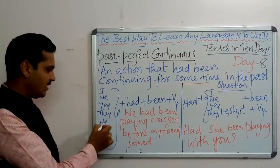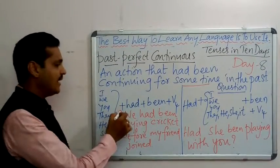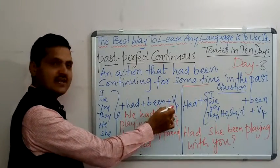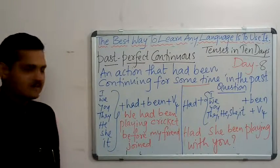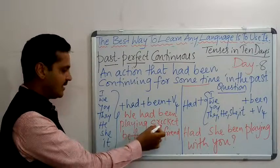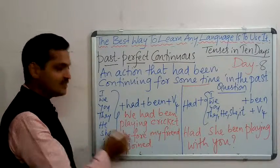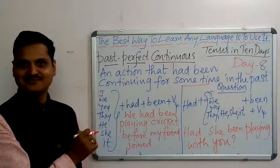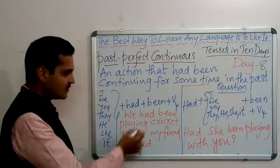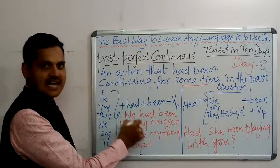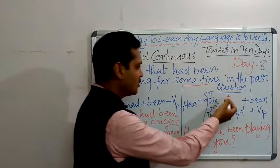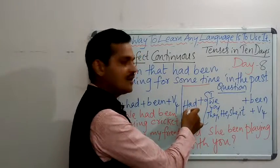...the main verb. For example: 'We had been playing cricket before my friend joined.' Before one action took place, the activity had been continuing. In questions, we start with the helping verb followed by the main subject — that is: 'had' plus I/we/you/they/he/she/it plus 'been' plus the main verb.